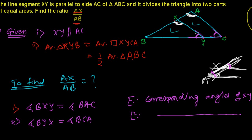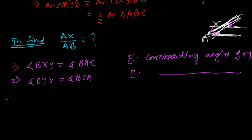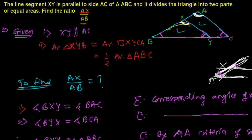Since two angles are equal, the third angle is automatically equal as well — because in two triangles, if two angles are equal, the third must also be equal. Therefore, triangle BXY is similar to triangle ABC by the angle-angle (AA) criterion of similarity.